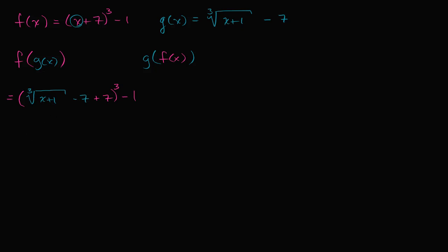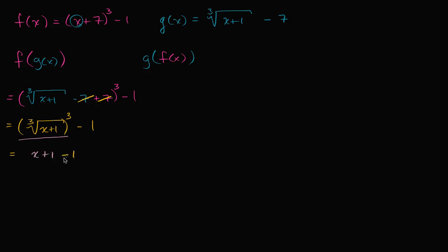Now let's see if we can simplify this. We have a minus seven plus seven, so that simplifies nicely. This becomes the cube root of x plus one, to the third power, minus one. If I take the cube root of x plus one and then raise it to the third power, that's just going to give me x plus one. So this part simplifies to x plus one, and then I subtract one. So it all simplified out to just being equal to x. f of g of x is just x.